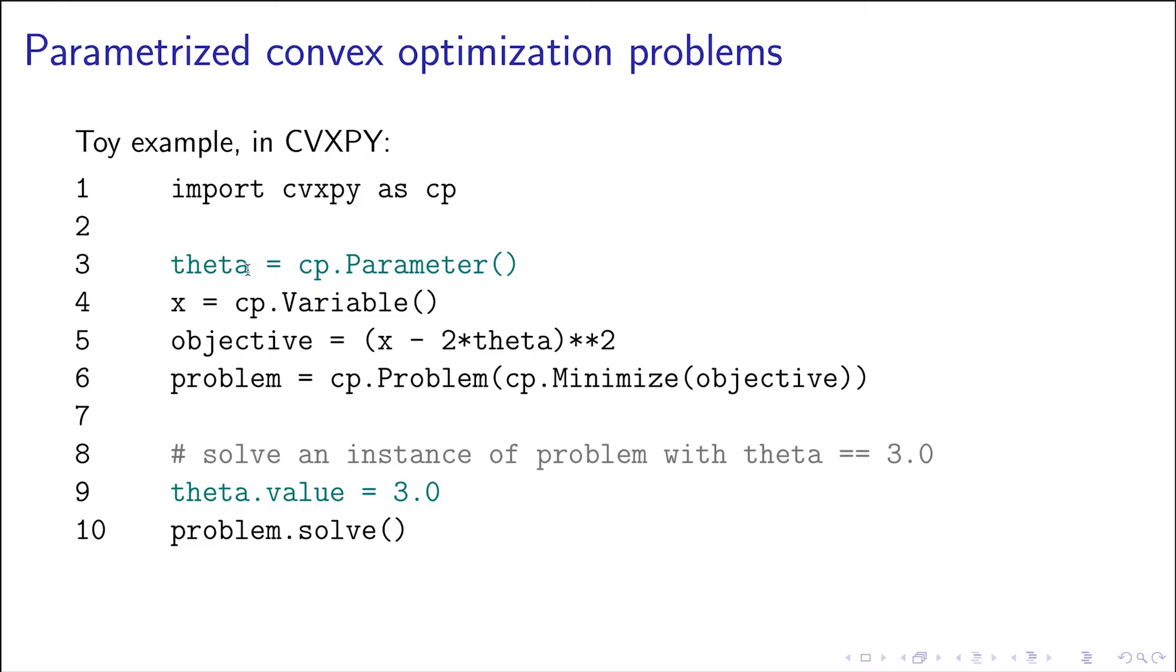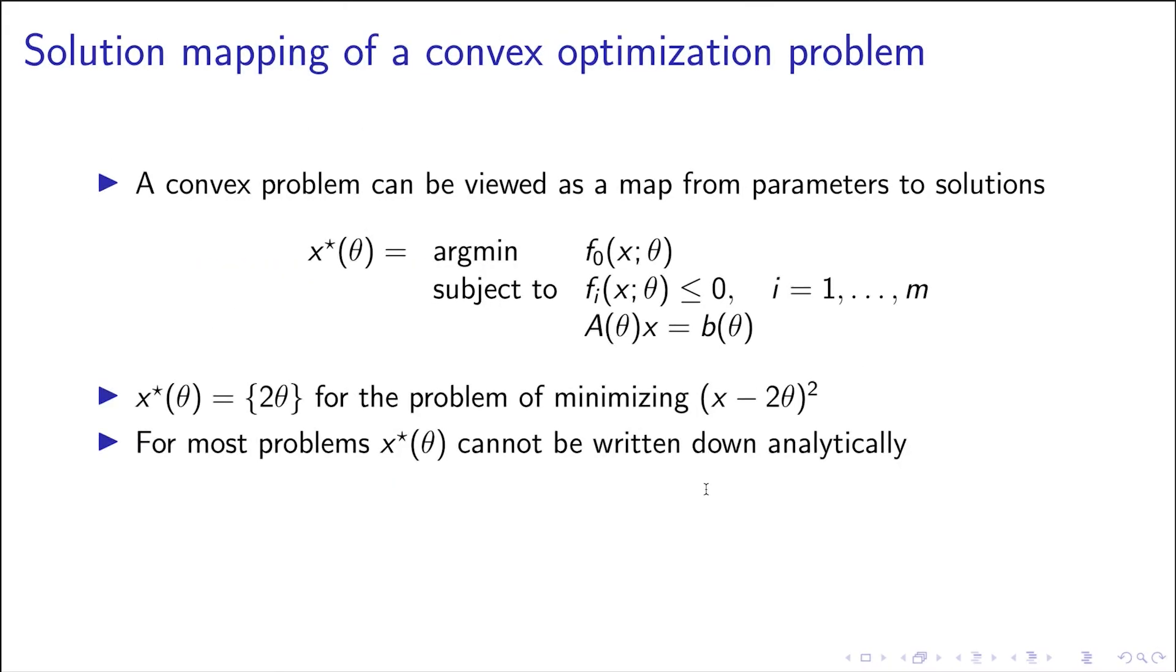Here we've coded it up in CVXPy, and we introduce this parameter object. So parameter is just a numerical value, a placeholder for numerical values. Here we construct the problem. Before we solve it, we assign a value—you have to have a numerical value before you actually solve the problem.